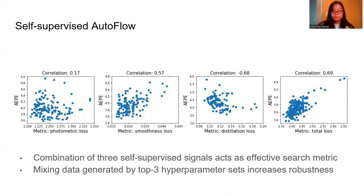Only the combination of all three self-supervised signals converges to models with low ground truth error and low self-supervised losses. To increase robustness, we use the top three hyperparameter sets returned by Self-Supervised Autoflow to generate data and mix them equally.